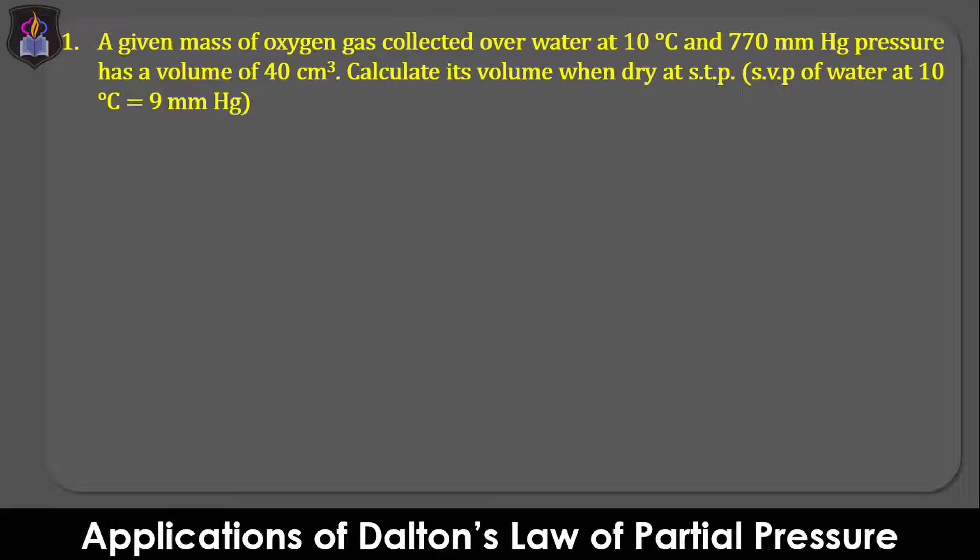Question 1: A given mass of oxygen gas collected over water at 10°C and 770 mmHg pressure has a volume of 40 cm³. Calculate its volume when dry at STP. The saturated vapor pressure of water at 10°C is 9 mmHg. This question is a combination of Dalton's Law of Partial Pressure and the general gas equation. We are expected to calculate the pressure of the dry gas at the non-standard conditions, then use that value to calculate the volume of the dry gas at standard conditions.